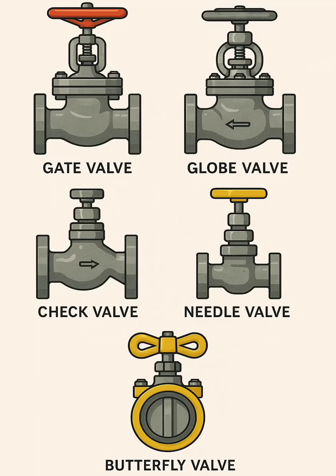Flow: Provides straight-line flow with minimal pressure drop when open. Use: Common on wellheads, flow lines, and pipelines. Not good for throttling.